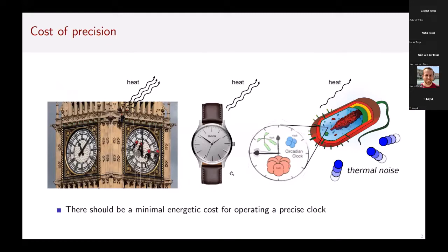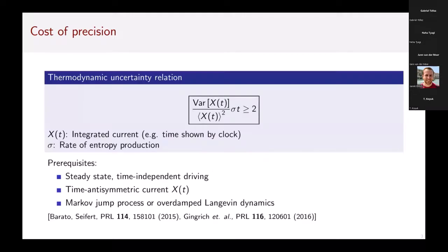You can wonder how far can you push that strategy. How small can you make a clock? You end up at these circadian clocks that you find in bacteria. There is one problem: if you go down to this molecular scale, there's always the thermal noise acting on your mechanism. You need to supply sufficient energy to outrun these thermal fluctuations.